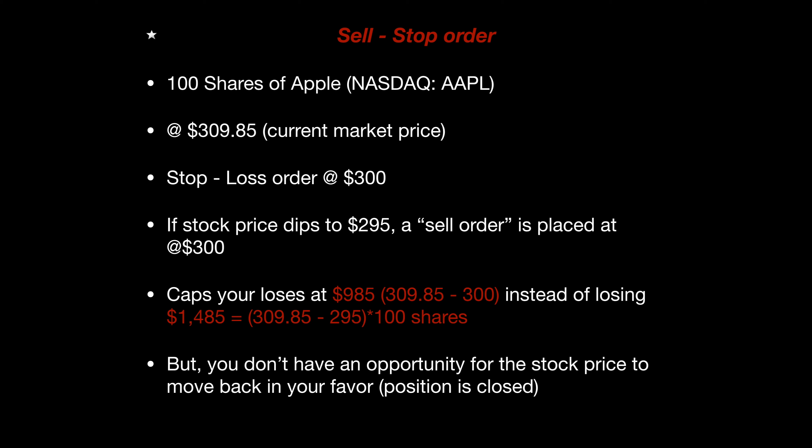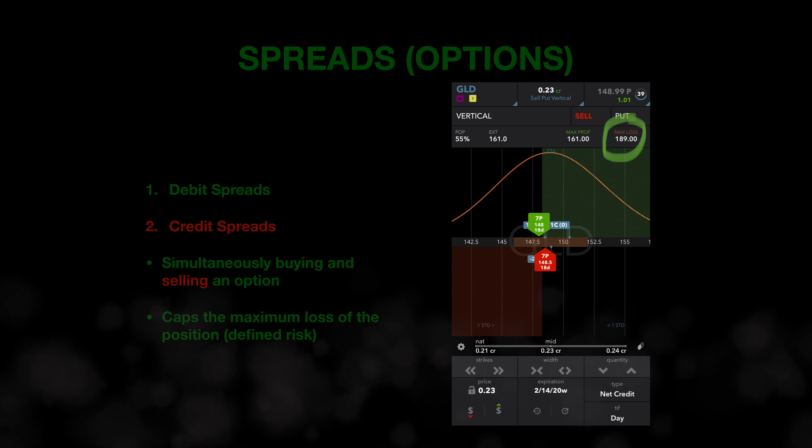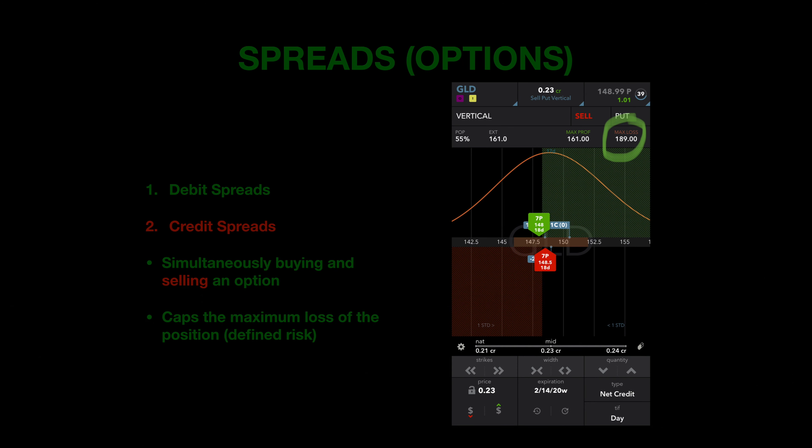The only downside is you don't have an opportunity for the stock price to move back in your favor, because you're going to sell those shares because of that stop loss. With a buy stop order, you're shorting shares — borrowing shares, selling at the higher price, and buying back at the lower price. You've sold 100 shares of Apple at $309.85 and put in a buy stop order at $315. If the stock price rises to $320, a buy order is placed at $315, capping your loss at $515 instead of $1,015. Again, you don't have that opportunity for the stock price to move back in your favor.